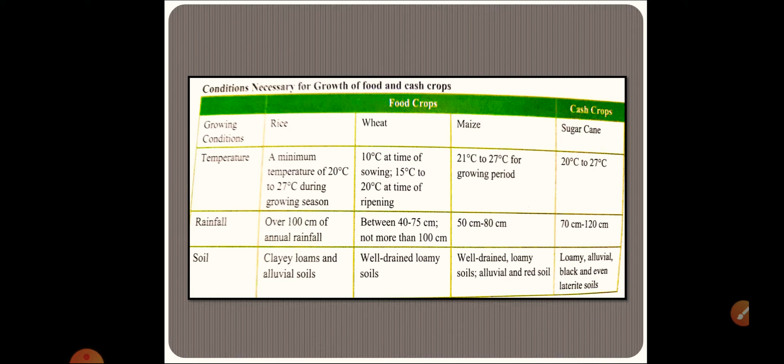Similarly, you can see of the wheat: 10 degrees Celsius at time of sowing and 50 degrees Celsius to 20 degrees Celsius at time of ripening is required. Rainfall, you can compare it from the rice: rice required over 100 centimeters, whereas wheat required only 40 to 75 centimeters, not more than 100.